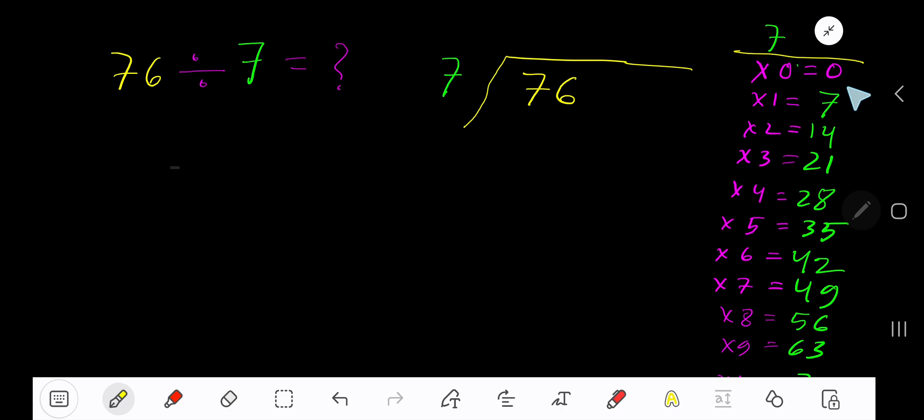0 plus 7 is 7, 7 plus 7 is 14, 14 plus 7 is 21, 21 plus 7 is 28. This process will continue. 7 goes into 7 how many times? 7 goes into 7 one time.